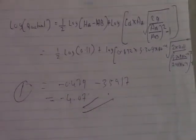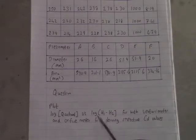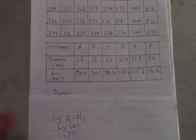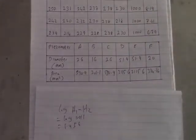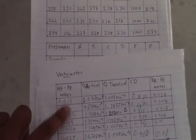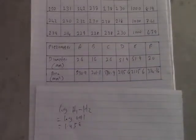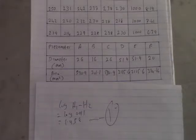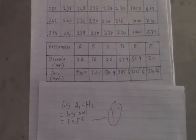After completing log Q actual, we also need log H1 minus H2. For test 1: log H1 minus H2 = log(0.011) = −1.9584. The same procedure applies for tests 2 through 6.